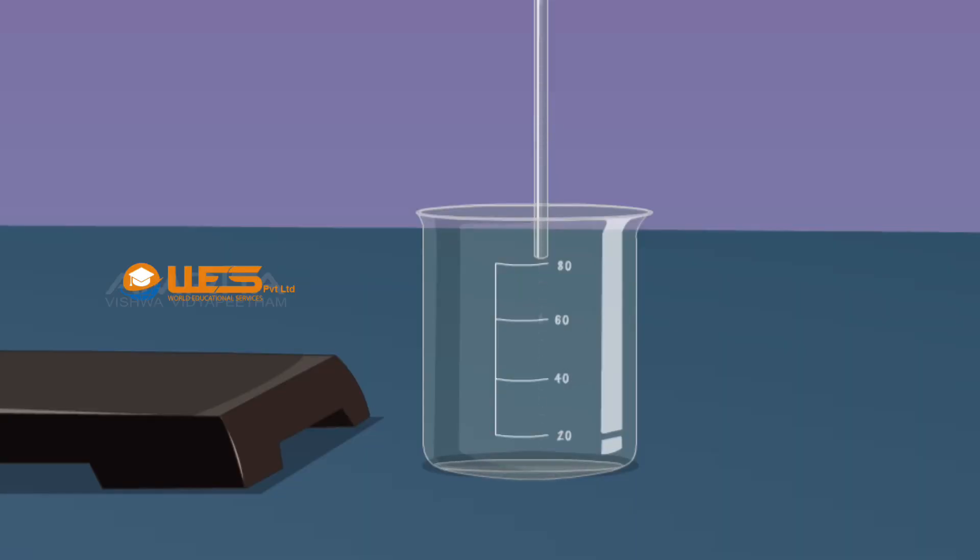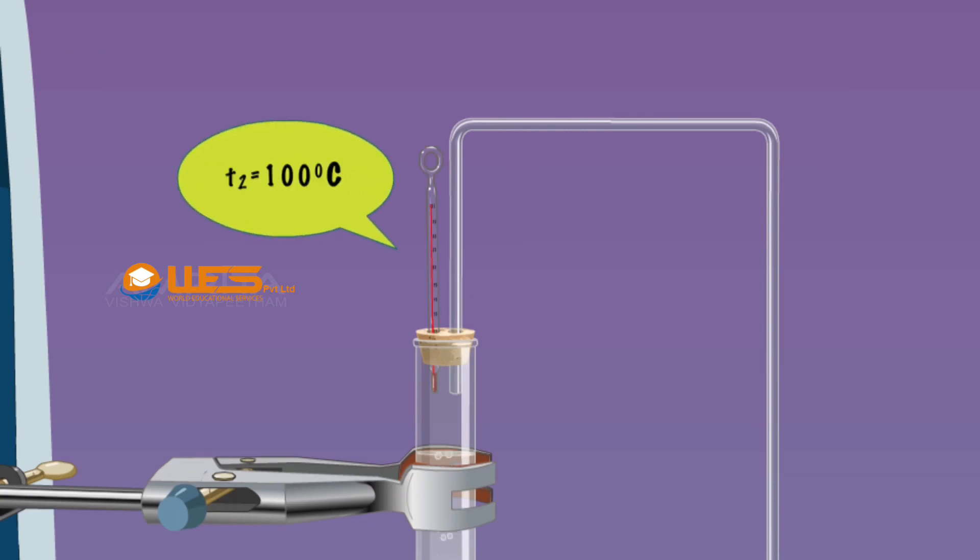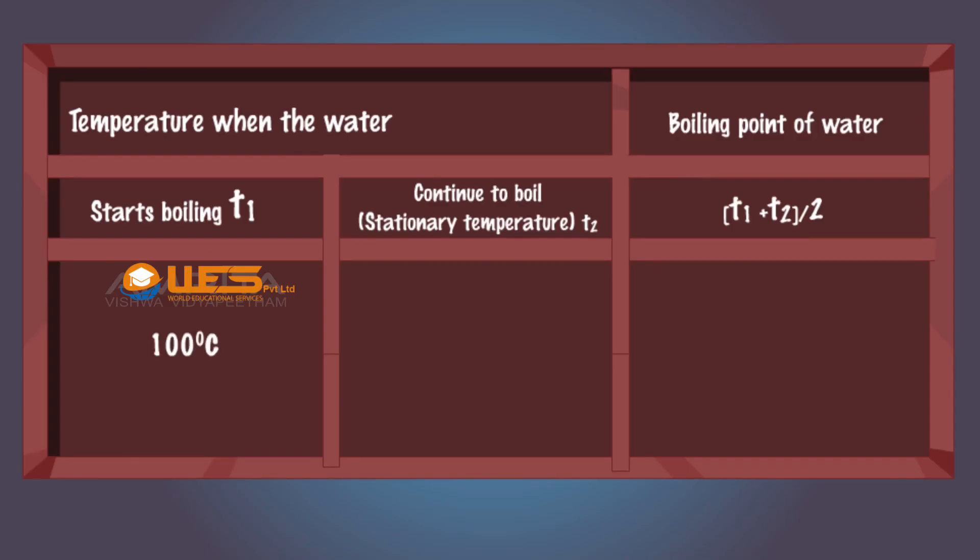Continue to heat the water until the temperature becomes constant and the water continues to boil. Note the constant temperature T2. The average of the two temperatures gives the boiling point of water. The boiling point of water is 100 degrees Celsius.